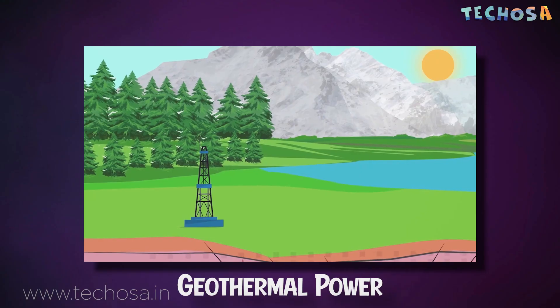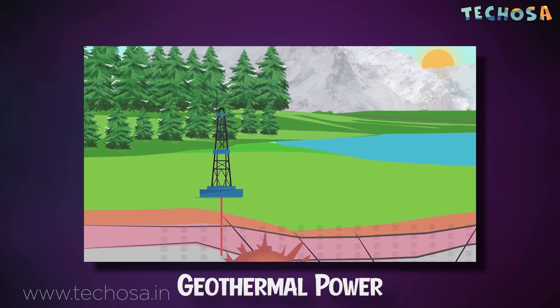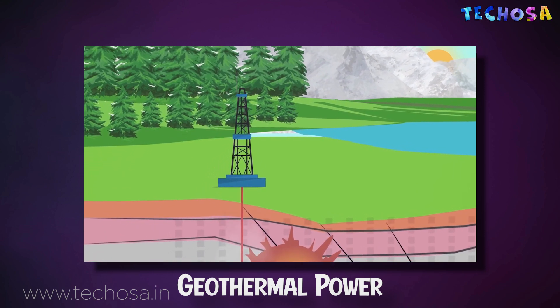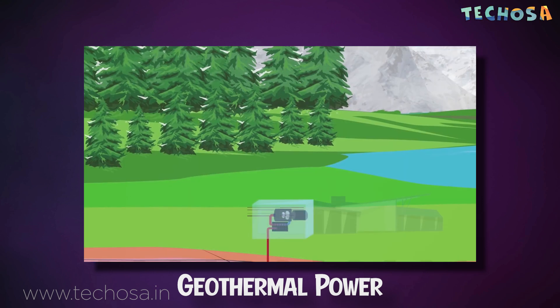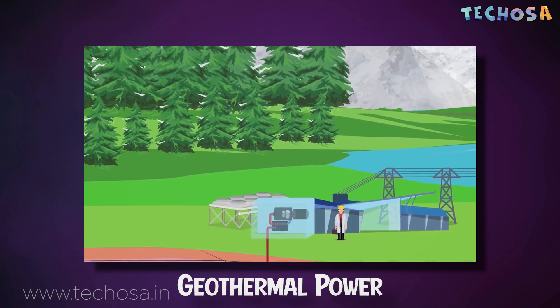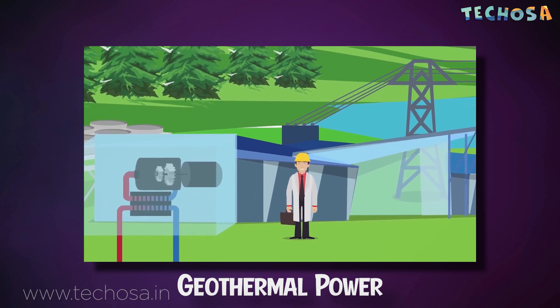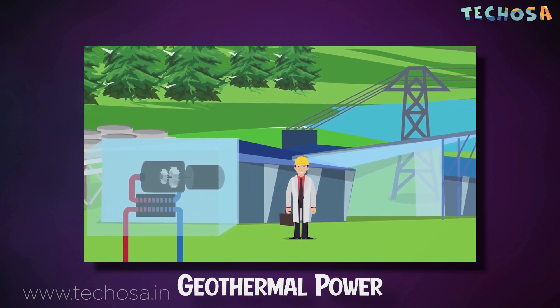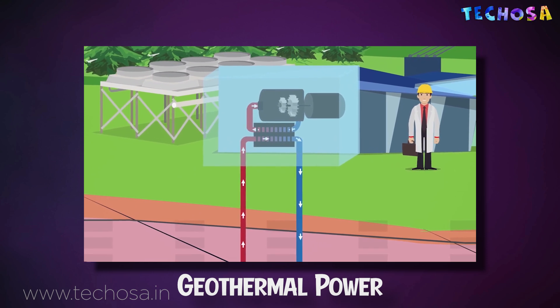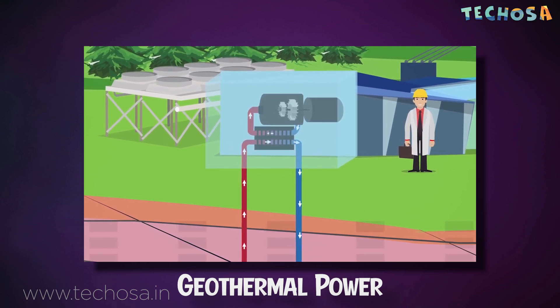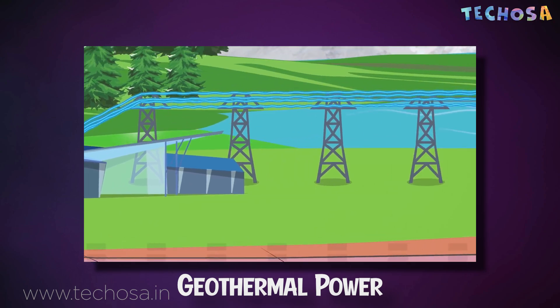Geothermal power is power generated by geothermal energy — thermal energy generated and stored in the earth. At the geothermal power plant, wells are drilled 1 or 2 miles deep into the earth where water gets heated naturally and pumps steam or hot water to the surface. The steam spins the turbine, which is connected to the generator that produces electricity. The steam cools off in a cooling tower and condenses back to water.